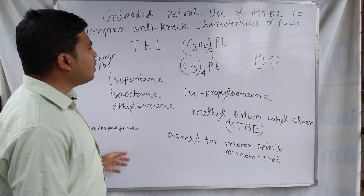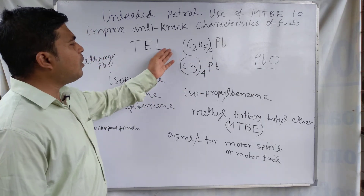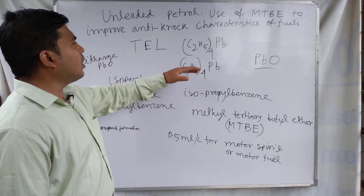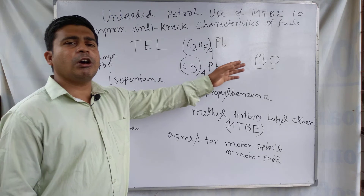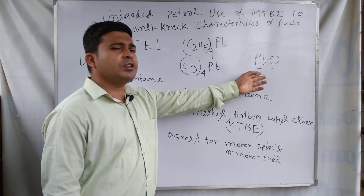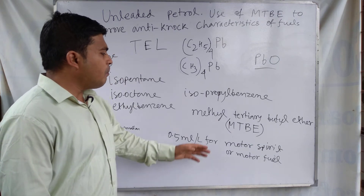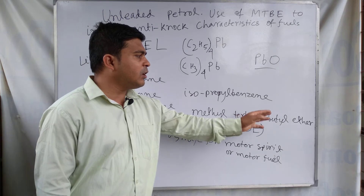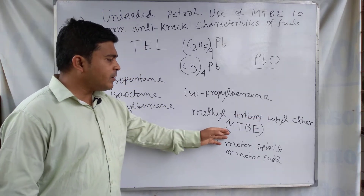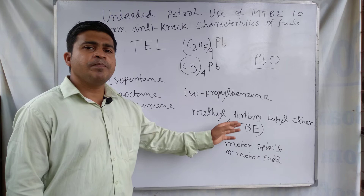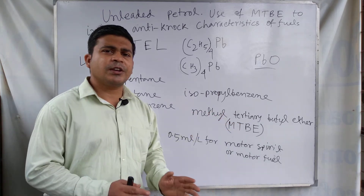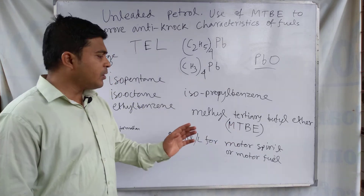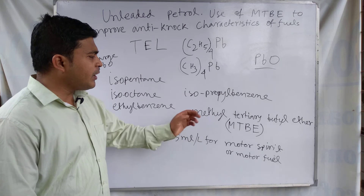We can use anti-knocking agents that are lead compounds or non-lead compounds. Lead compound use has disadvantages: lead oxide is formed which jams the cylinder and piston. In the case of MTBE use — methyl tertiary butyl ether — the advantage is that it supplies oxygen to the internal combustion engine and reduces the formation of peroxide compounds.